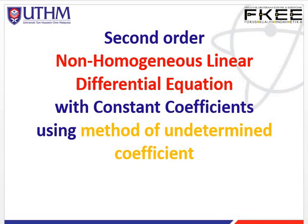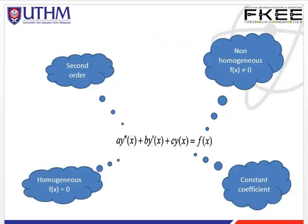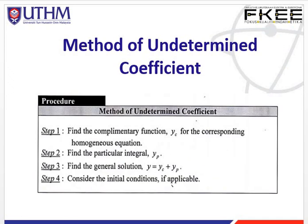Hello everyone. In this session I would like to share with you about the second order non-homogeneous linear differential equation with constant coefficients using the method of undetermined coefficients. Non-homogeneous is when the linear differential equation equals f(x), and this f(x) is not equal to zero. There are two methods to solve it: the undetermined coefficient and the variation of parameters. But in this course, we only cover the undetermined coefficient method.